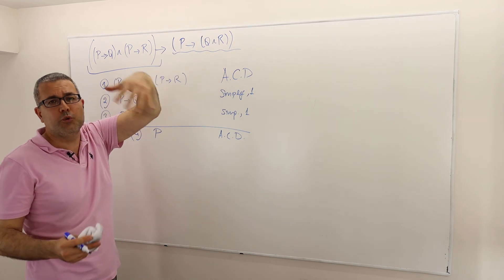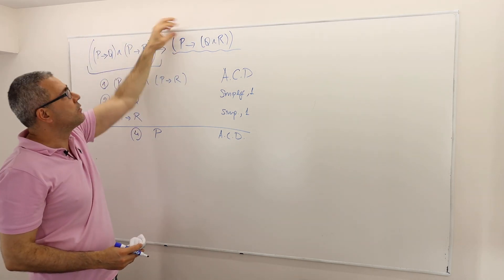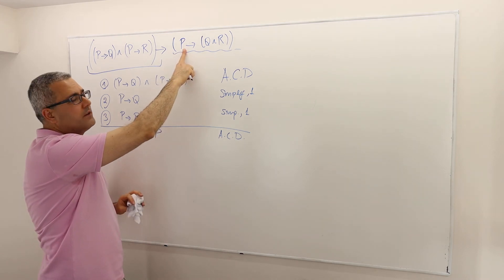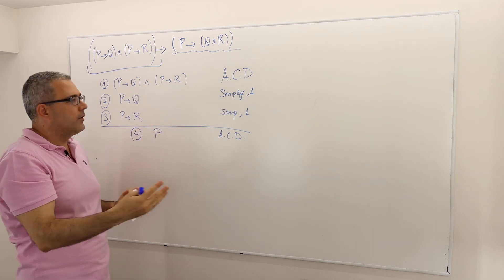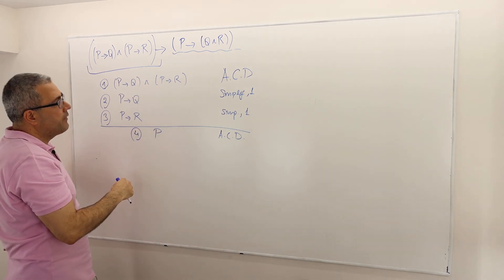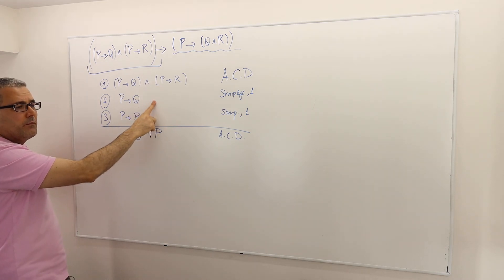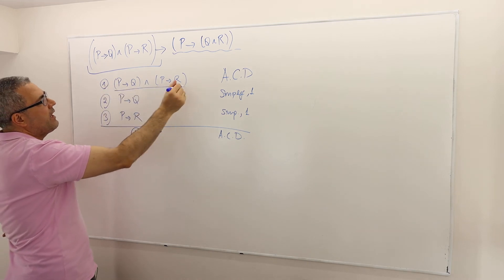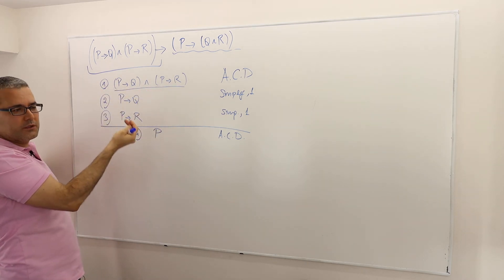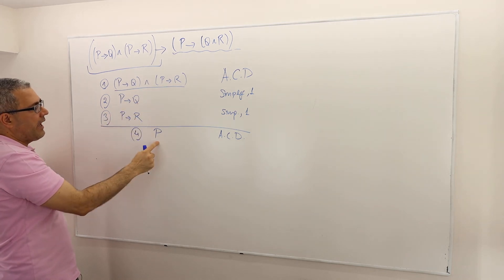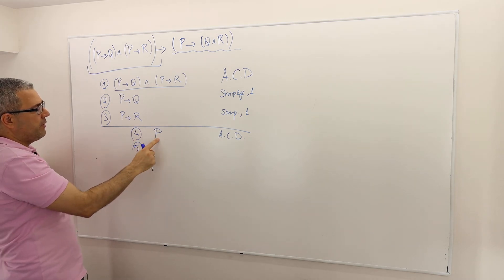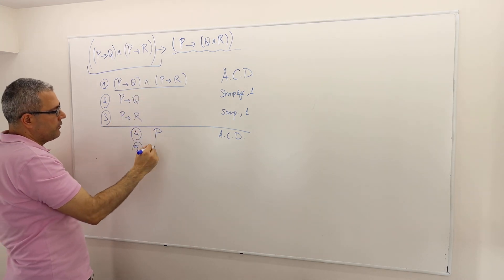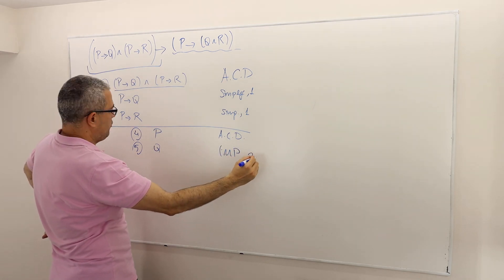I want to show that P implies Q and R is true because I assumed the first part. If P is false, the argument is true anyway. So I need to show that when P is true, P implies Q and R is also true. Suppose P is true — I can use everything beforehand because I have not closed any box yet. I'll use the simpler versions, lines two and three. P implies Q and P — modus ponens — so Q must be true. This is modus ponens of arguments two and four.